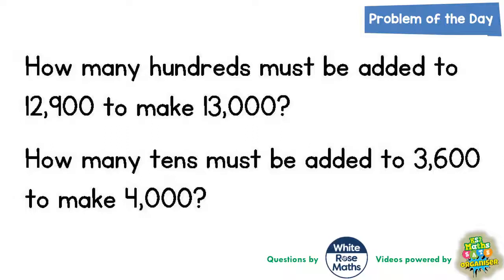Well there's a couple of ways you can think about this. Some of you may be able to just do it in your head and figure out that the difference between 12,900 and 13,000 is 100. So the answer to the first one is 100, which you could write as 100 or one hundred, either way because it's asking how many hundreds.